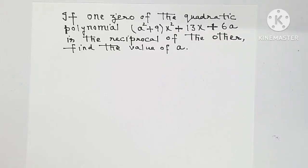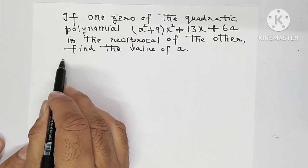Hello everyone, in this video, I am doing one of the questions of the chapter polynomials class 10th. Important question: If one zero of the quadratic polynomial (a²+9)x² + 13x + 6a is the reciprocal of the other, then find the value of a.